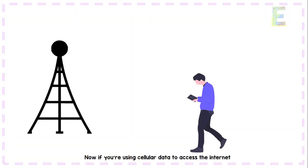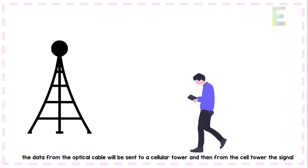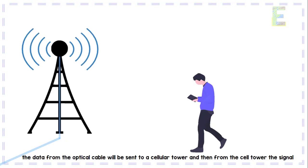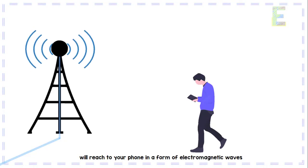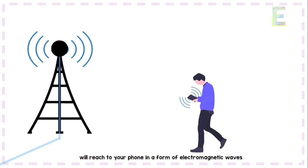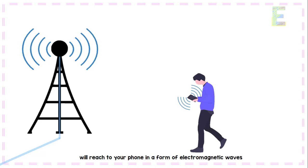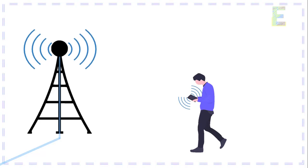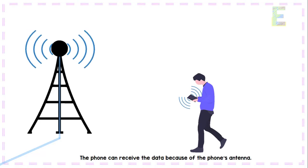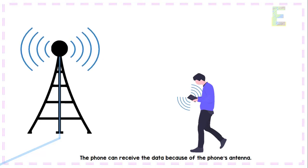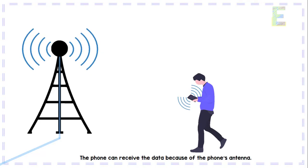Now, if you are using cellular data to access the Internet, the data from the optical cable will be sent to a cellular tower, and then from the cell tower, the signal will reach your phone in the form of electromagnetic waves. The phone can receive the data because of the phone's antenna.